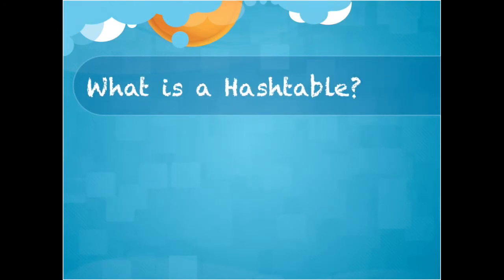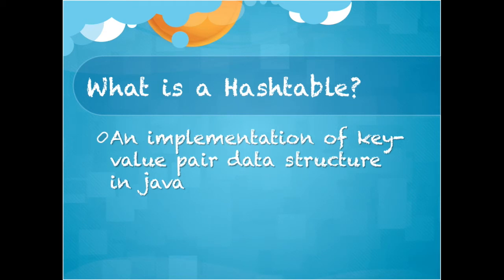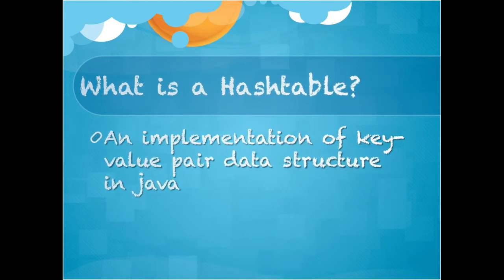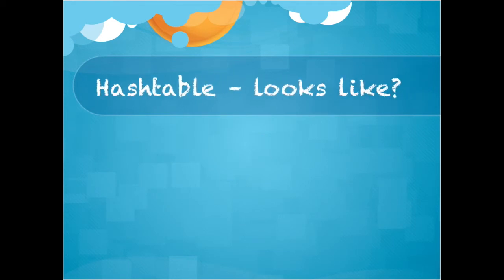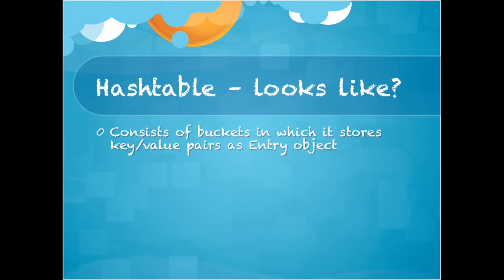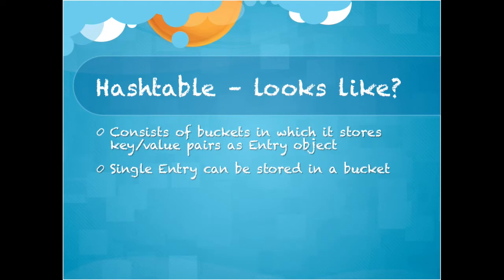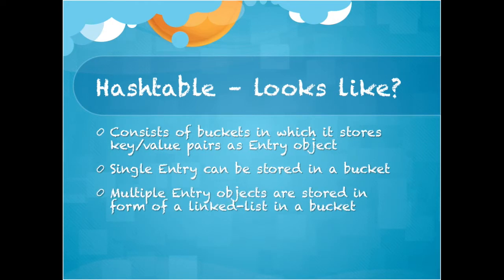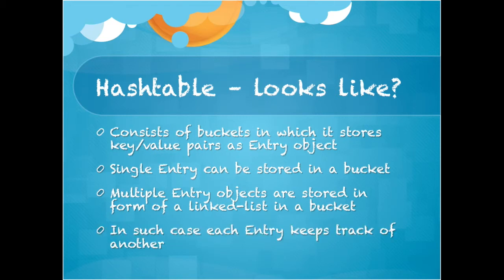What is a hash table? A hash table is an implementation of key value pair data structure in Java. Let us first try to understand how a hash table looks like. A hash table consists of buckets in which it stores key value pairs as entry objects. A single entry can be stored inside a bucket. Multiple entry objects are stored in the form of a linked list inside a bucket. In such case each entry keeps track of another.